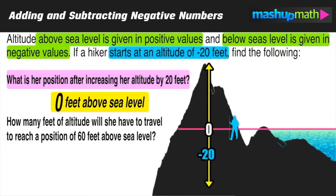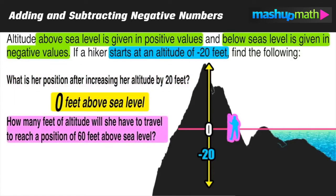Now our next task is to find out how many feet of altitude will she have to travel to reach a position of 60 feet above sea level. Remember, she started 20 feet below sea level at negative 20, and she wants to get to positive 60 above sea level. So we need to figure out how many feet of altitude in total she has to increase to get from negative 20 to positive 60.